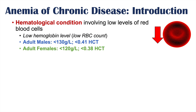For the definition of what constitutes a low hemoglobin level, it depends on the biological sex of the patient. If the patient is an adult male, a hemoglobin less than 130 grams per liter would be considered anemia, or a hematocrit — the proportion of blood that is red blood cells — less than 0.41. In adult females, a hemoglobin less than 120 grams per liter, or a hematocrit less than 0.38, would be considered anemia.